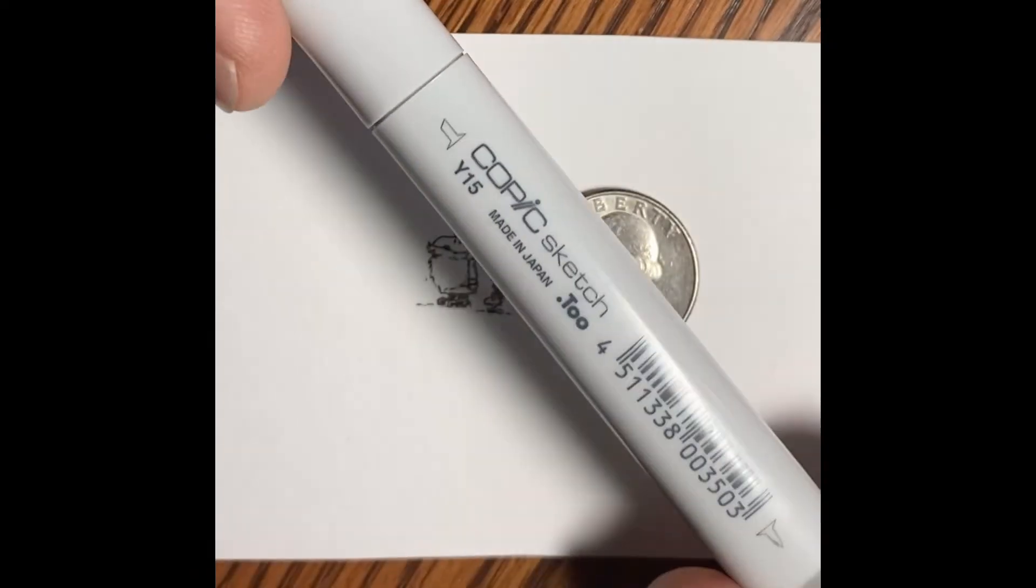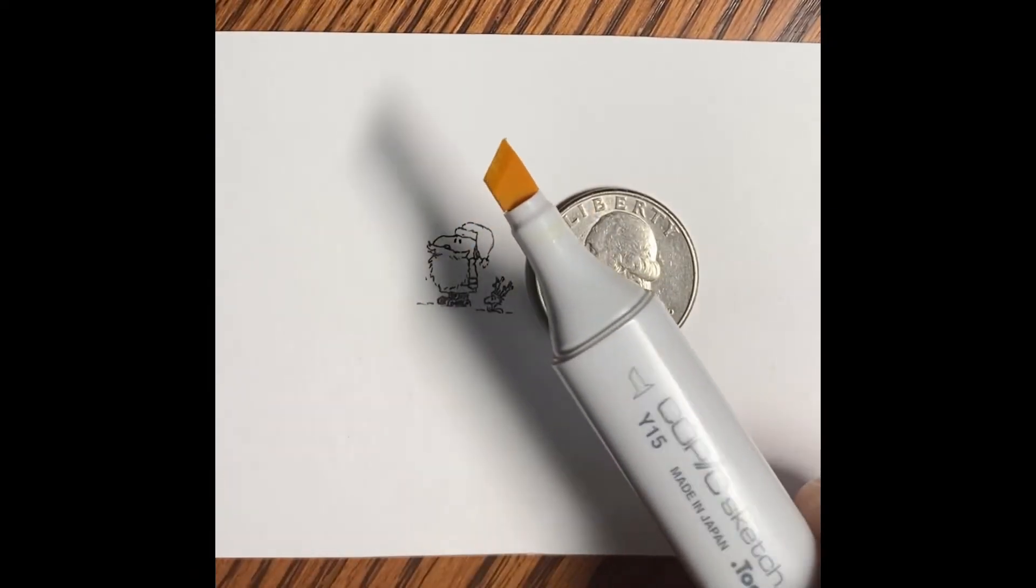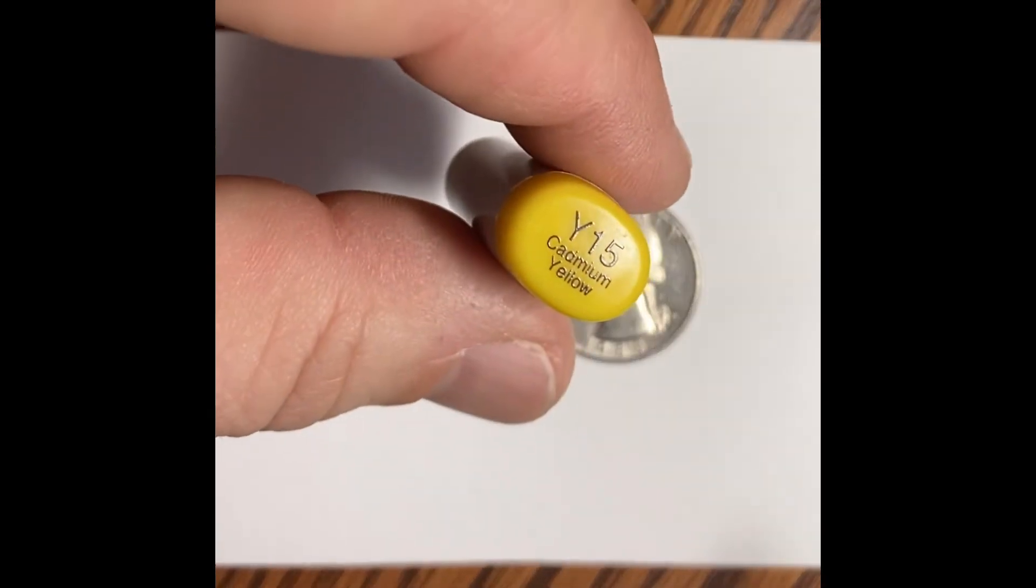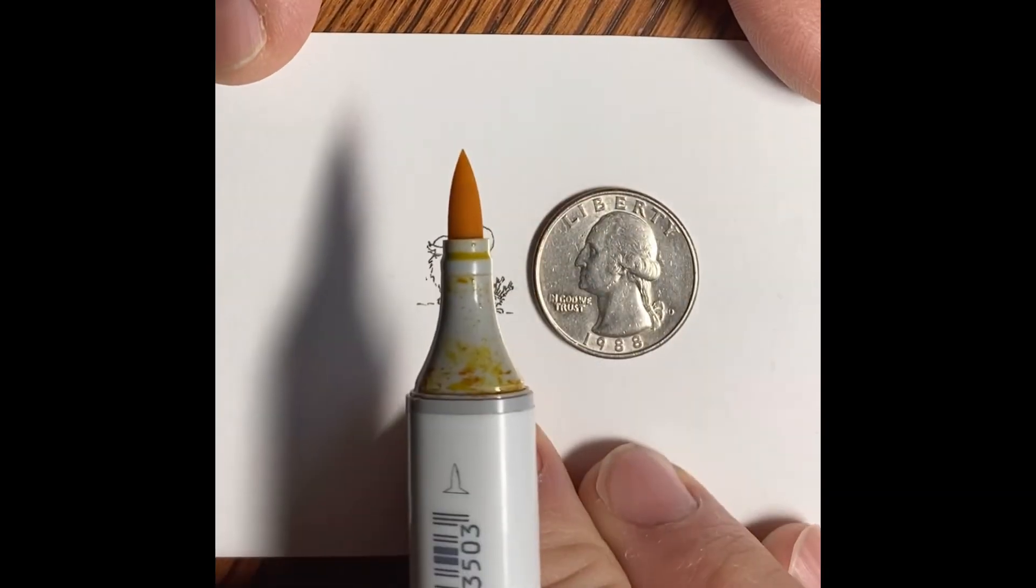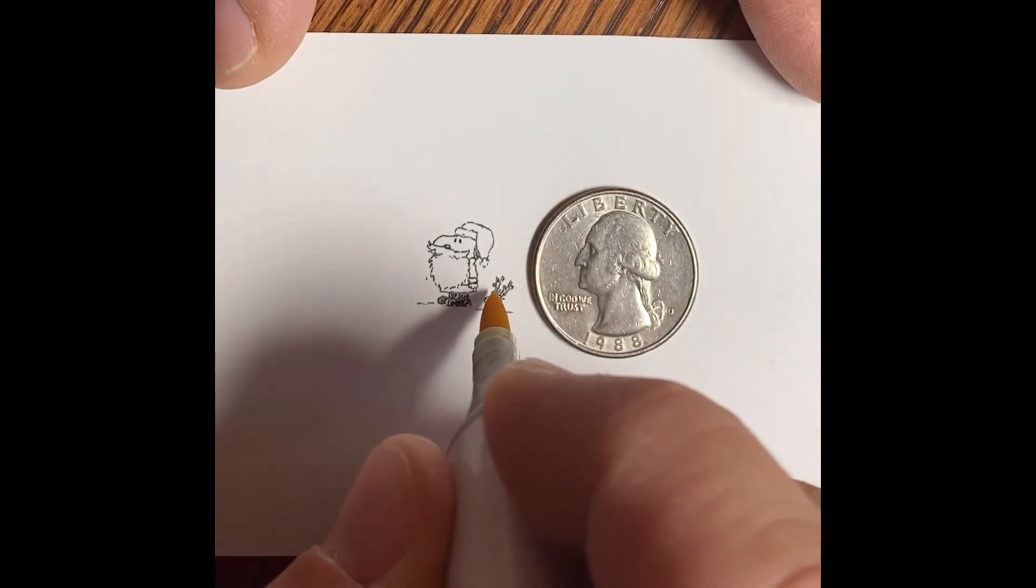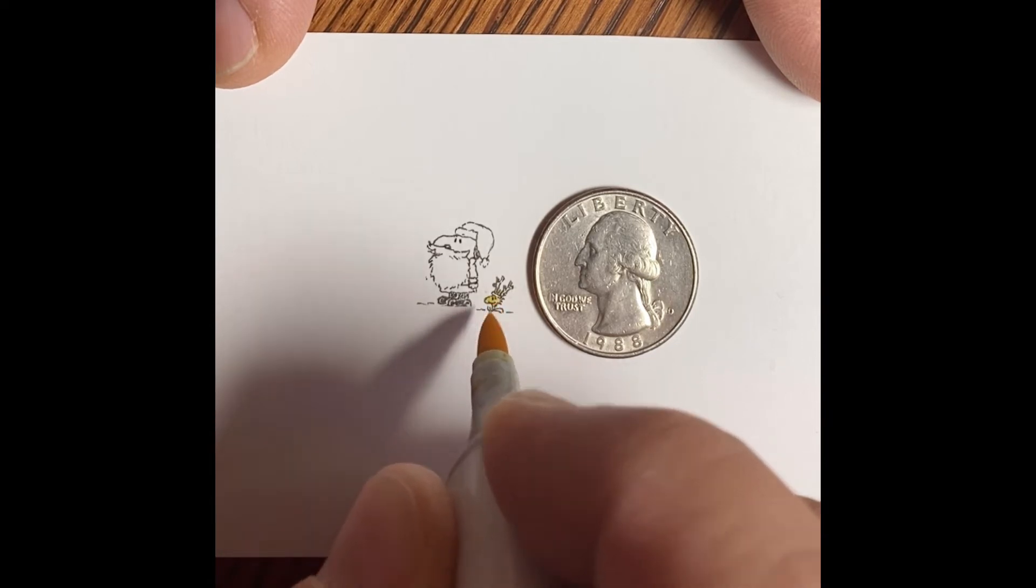Moving on to the Copic sketch markers. There's the broad chisel end that I don't use. I'm using the cadmium yellow and the fine tip, just lightly touching in on Woodstock. There's not a lot to color so it's more of a dabbing motion to fill him in.